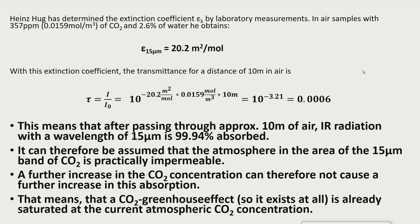With this extinction coefficient, the transmittance for a distance of 10 meters in air is 0.0006. This means that after passing through approximately 10 meters of air, infrared radiation with a wavelength of 15 micrometers is 99.94 percent absorbed. It can therefore be assumed that the atmosphere in the area of the 15 micrometer absorption of CO2 is practically impermeable. A further increase in CO2 concentration can therefore not cause a further increase in this absorption — meaning that the CO2 greenhouse effect, if it exists at all, is already saturated at the current atmospheric CO2 concentration.